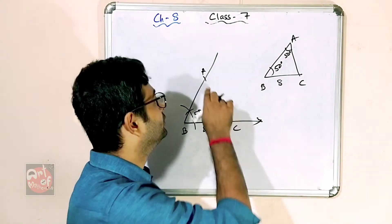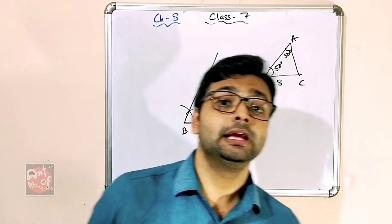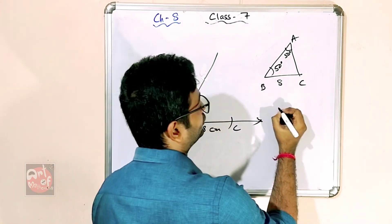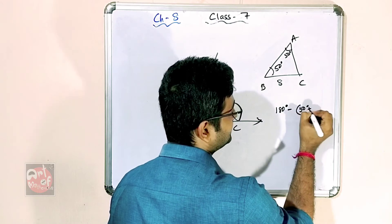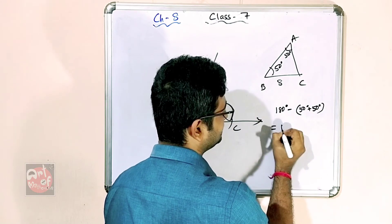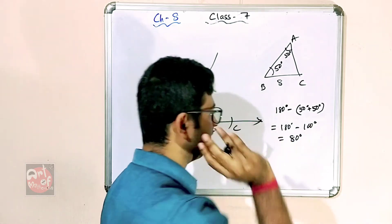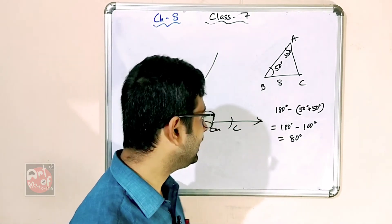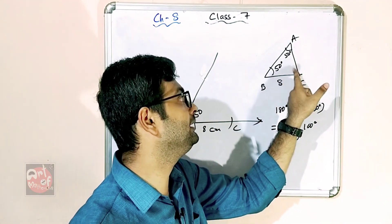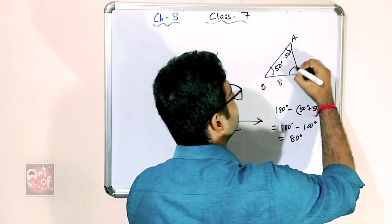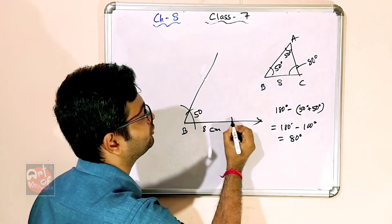So what to do? By the angle sum property, you have to find the remaining angle. 180 degrees is the total sum. These two angles sum to 50 plus 50 degrees. So 180 minus 100 gives you angle C. Angle A is 50, angle B is 50, so the remaining angle C is 80 degrees.